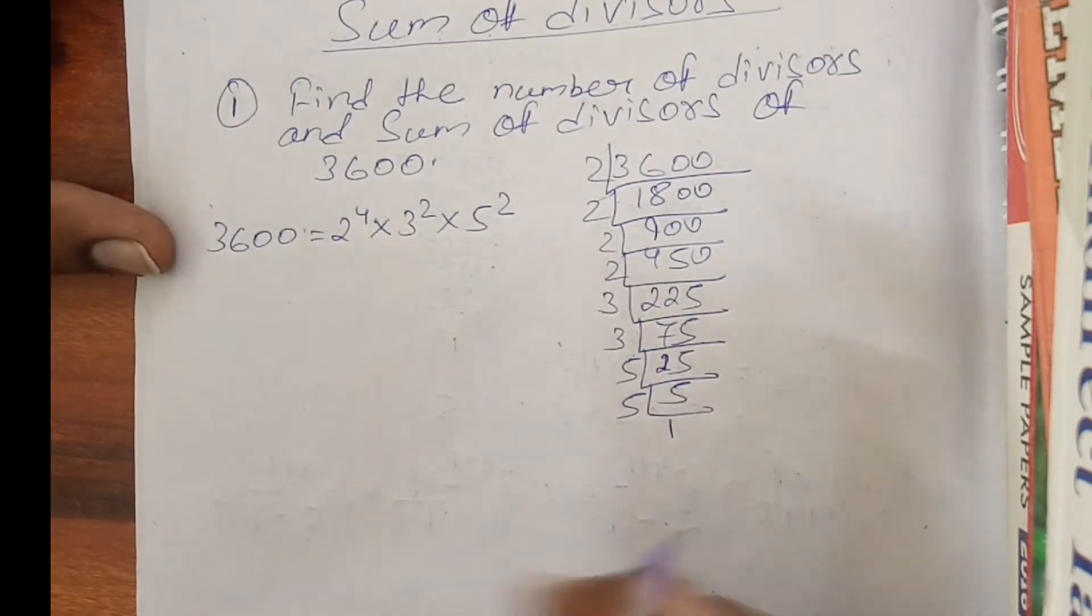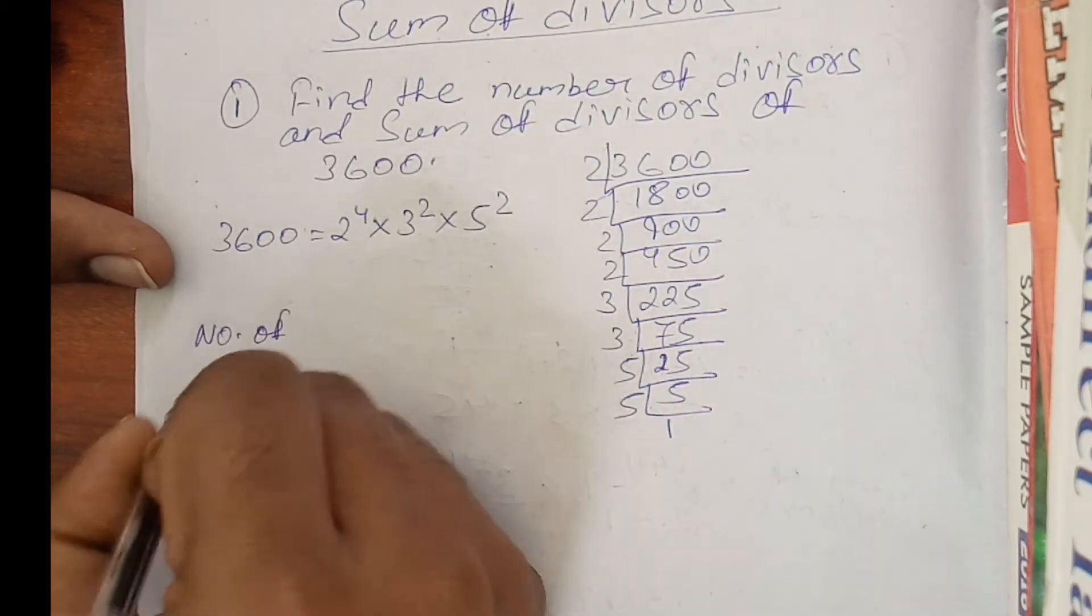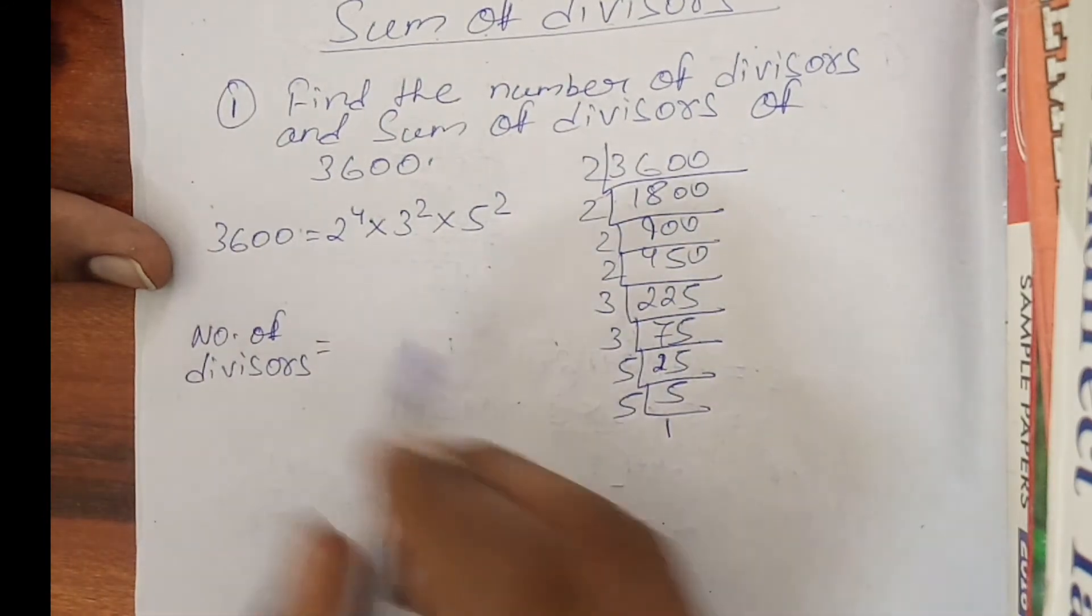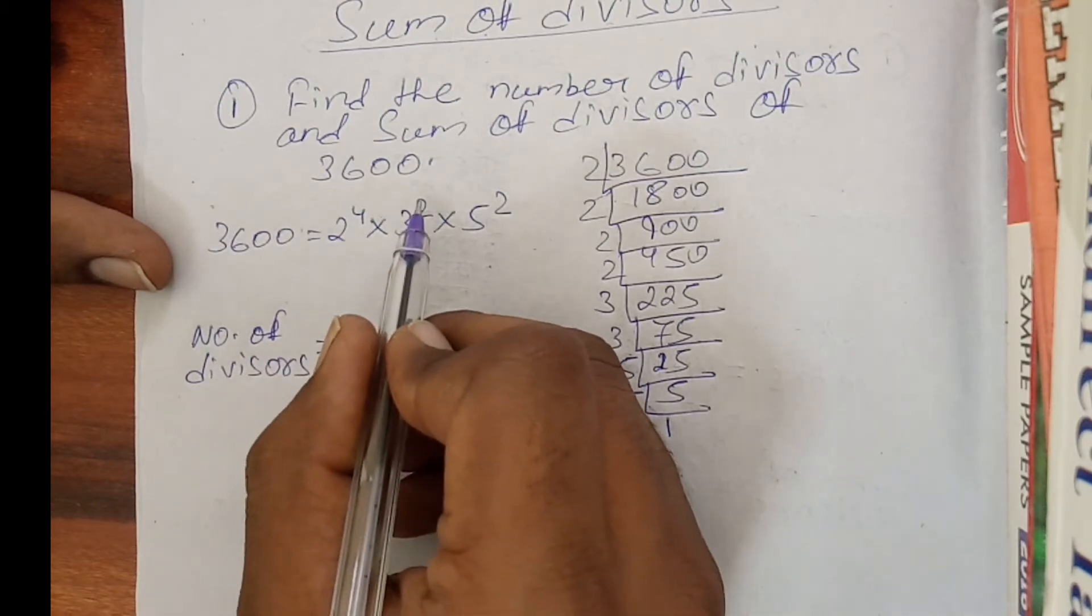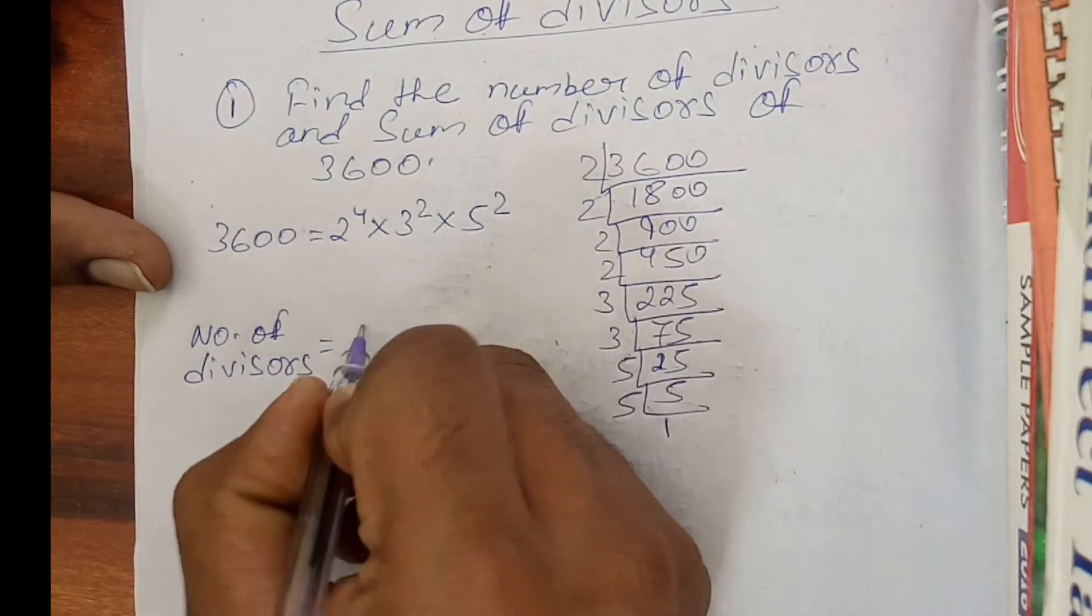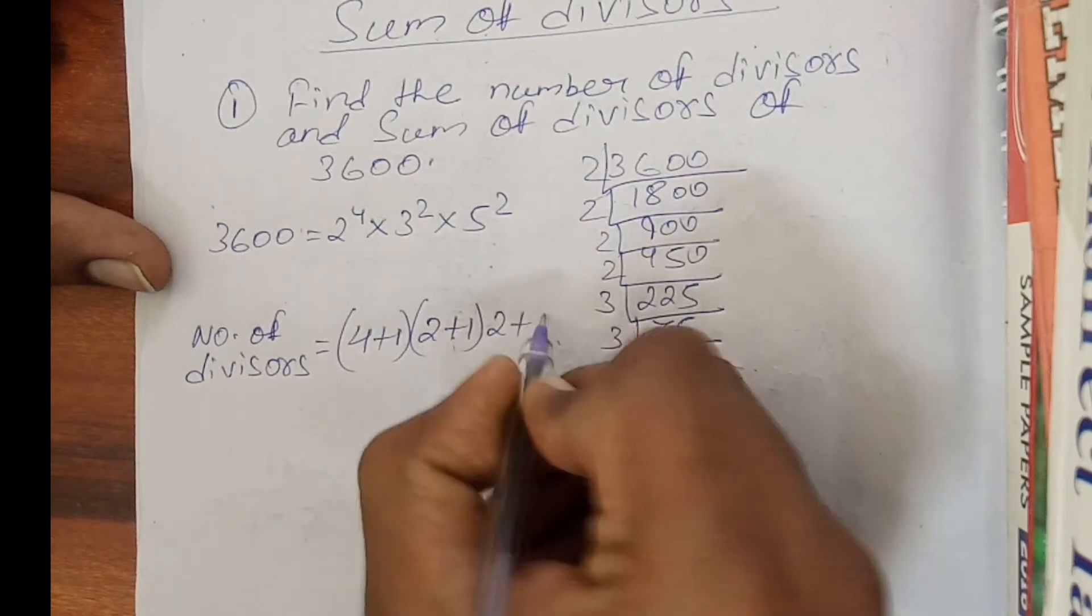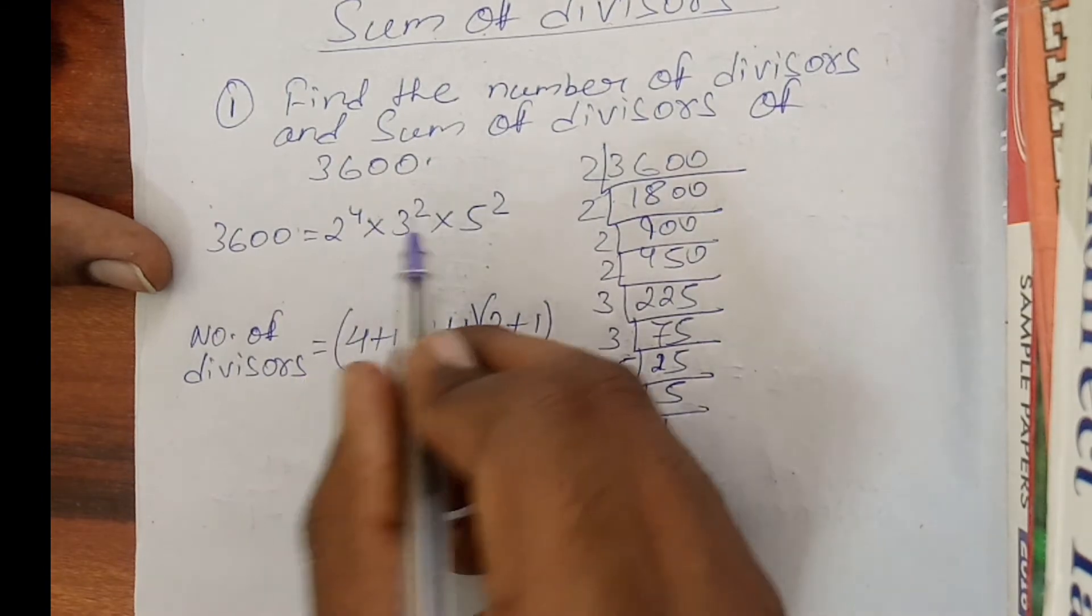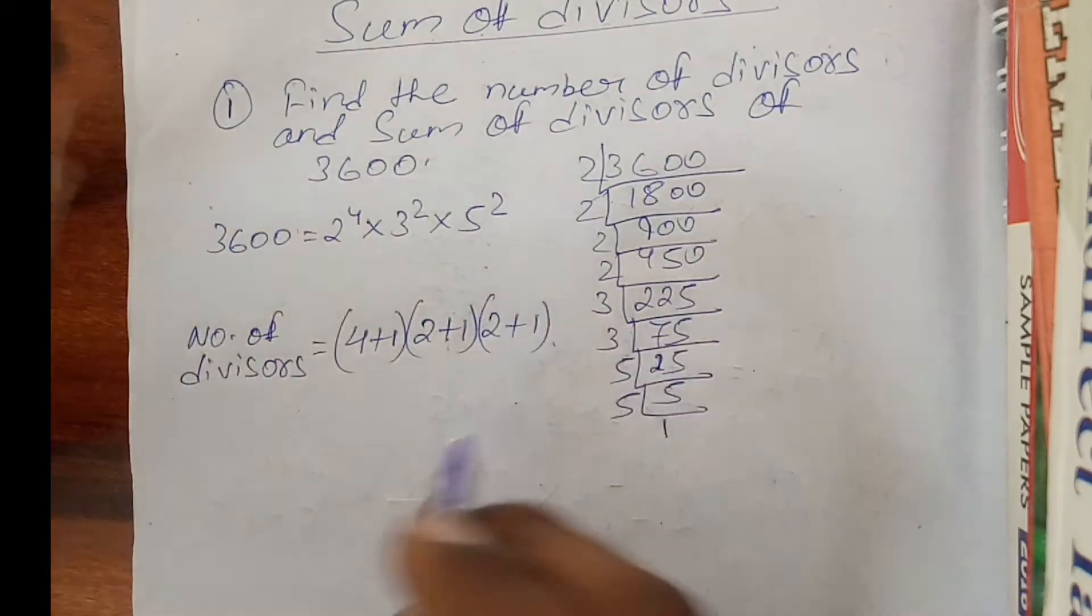Now how to find the number of divisors? Number of divisors is equal to: take the power and add plus 1, and then multiply the second power add with plus 1, and multiply the third power add with plus 1. So 4 plus 1 whole times 2 plus 1. You have to take the power, add with 1, and then multiply the second power with addition of 1, and so on.